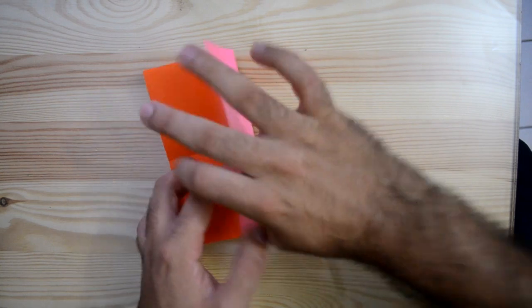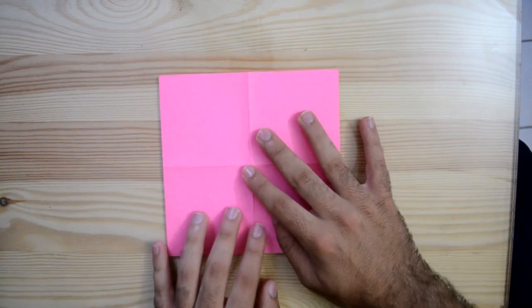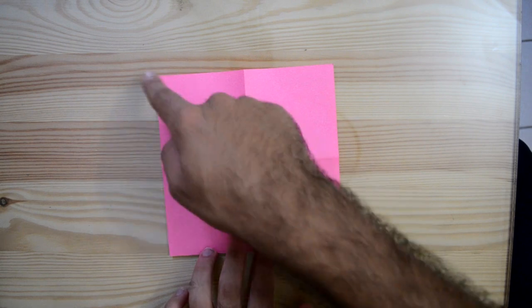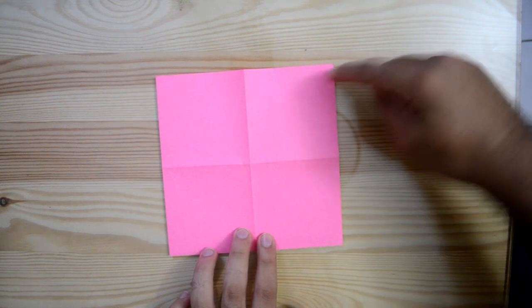Then unfold the paper and turn it to this side. I'm going to fold an X now, this way, then we're going to make another crease here.